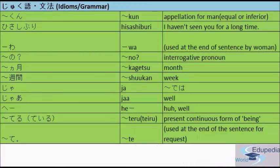The next section is jukugo — idioms and grammar. The first one is 'nani-kun'. 'Kun' is an appellation for a man equal or inferior in status — in other words, a nickname. For example, 'Raja-kun'.